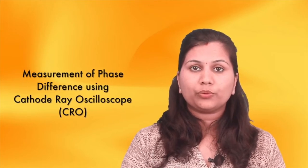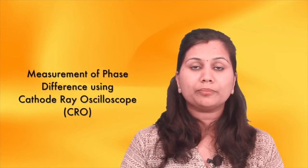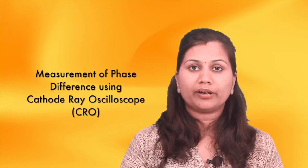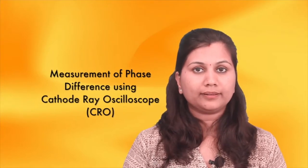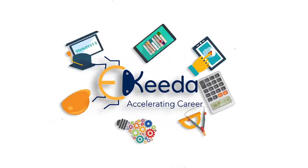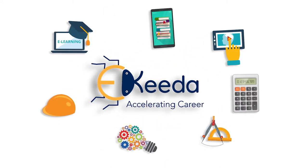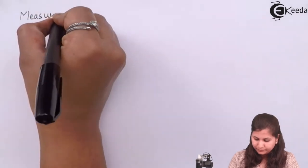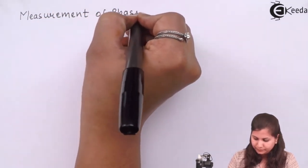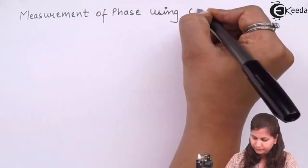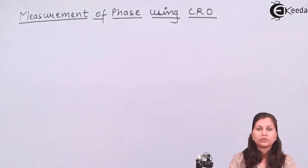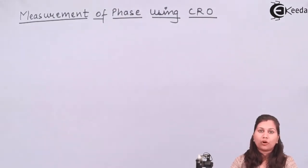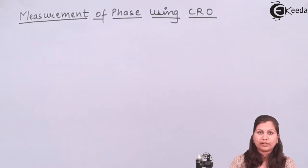Hello friends, in this video we are going to study the measurement of phase using the cathode ray oscilloscope, also known as CRO. The cathode ray oscilloscope, also known as CRO, is one of the most common laboratory instruments which is used for the display of different types of electronic signals.